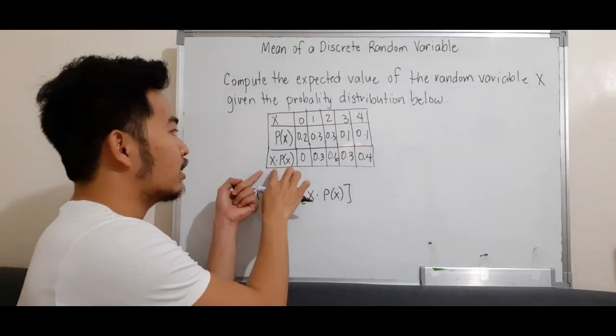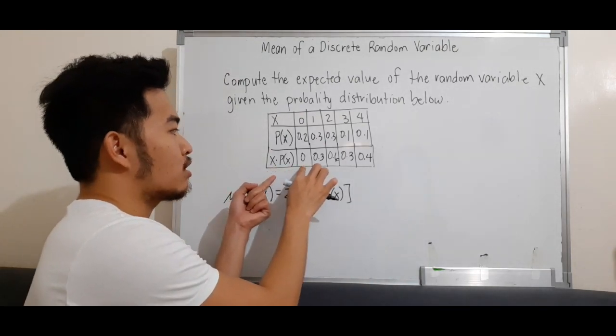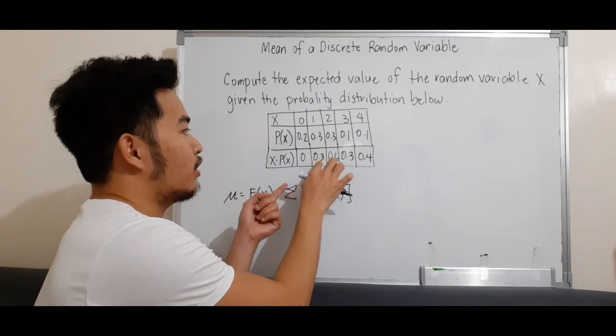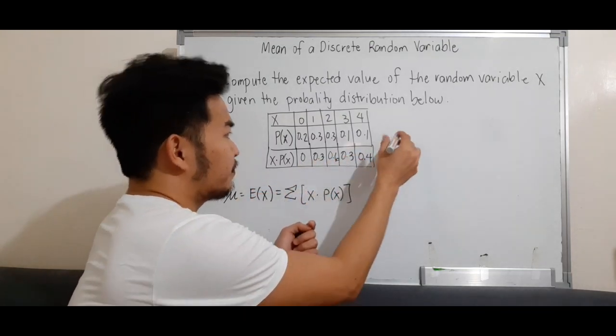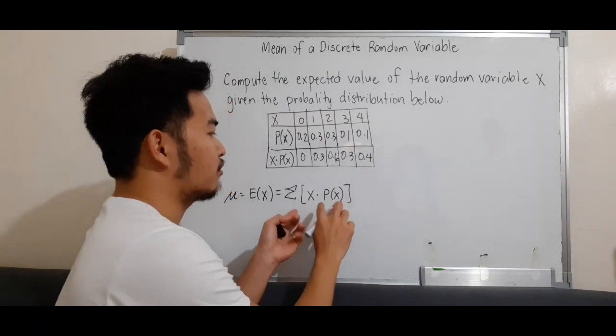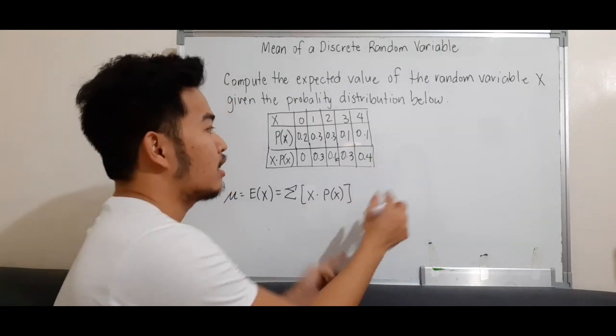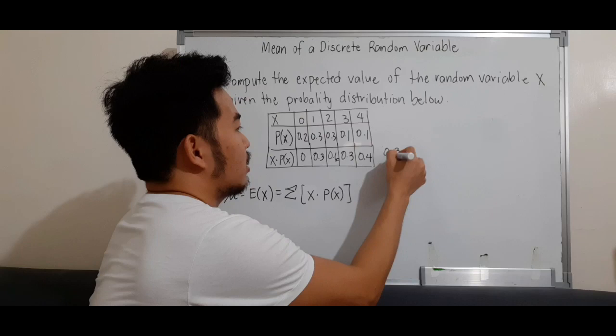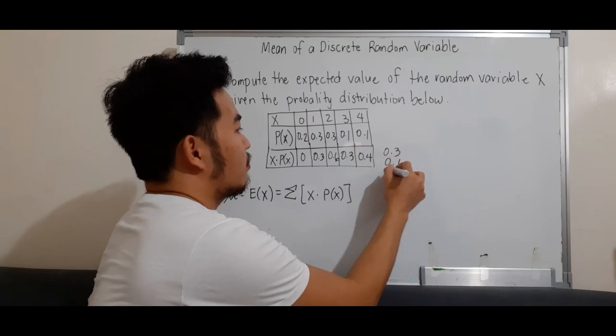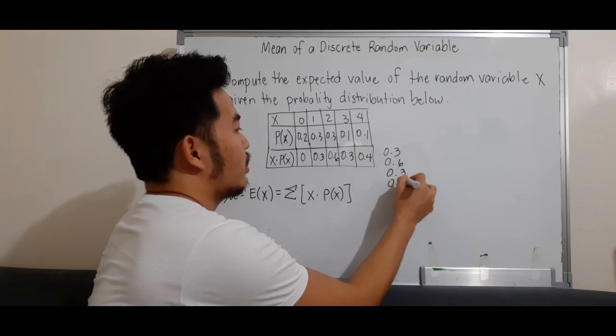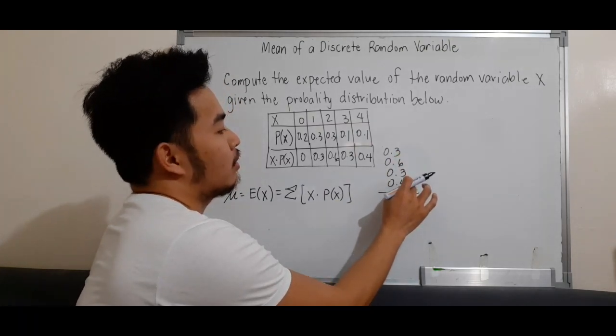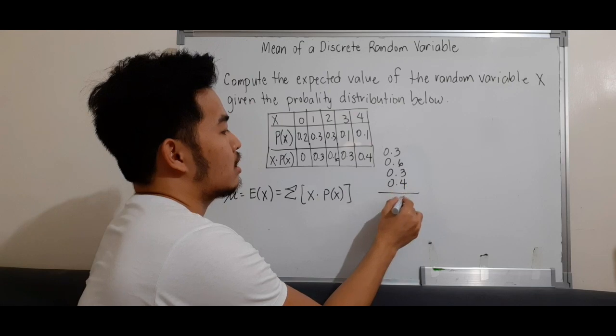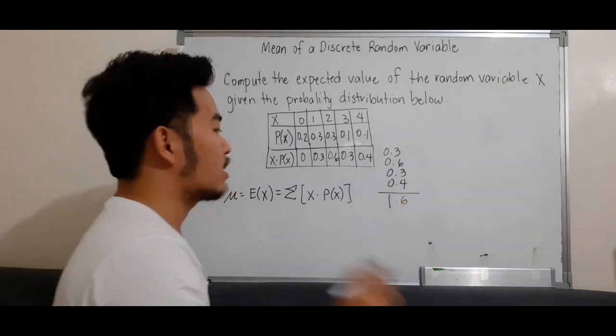After that, we'll take the summation of these. So we add 0 plus 0.3 plus 0.6 plus 0.3 plus 0.4. That's the summation of x times P(x). So 0.3 plus 0.6 plus 0.3 plus 0.4 equals 1.6.